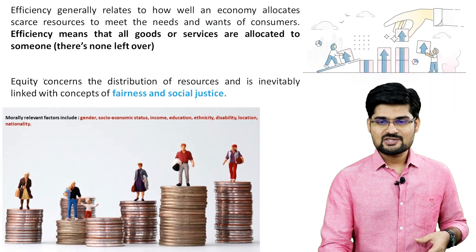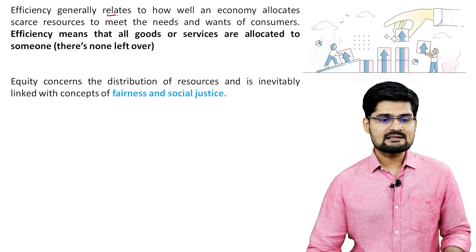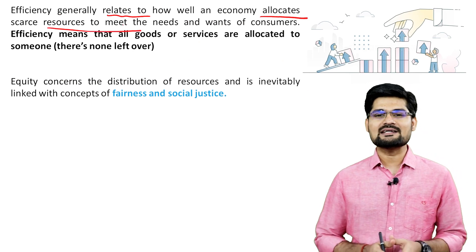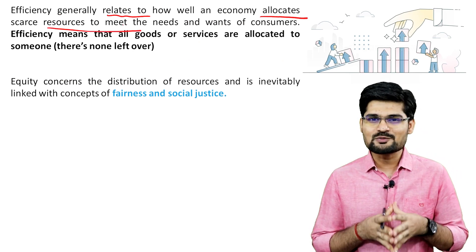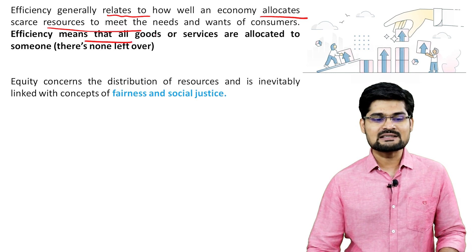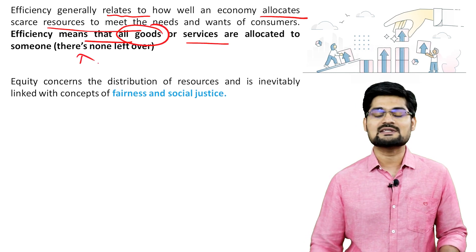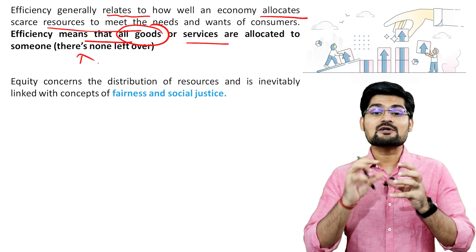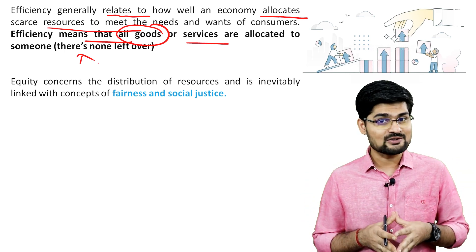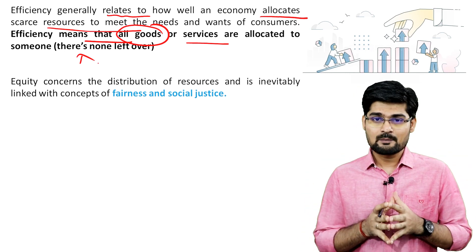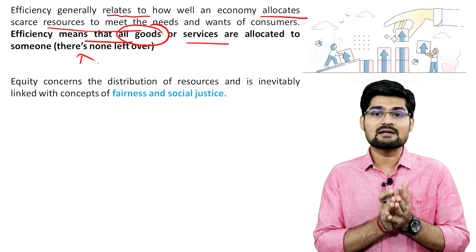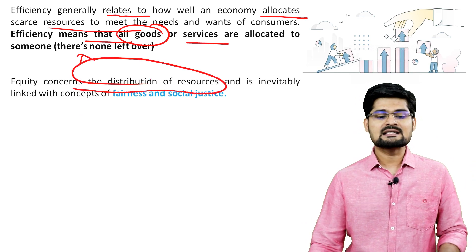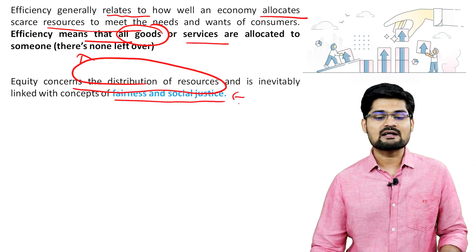In simplification, efficiency generally relates to how well an economy allocates scarce resources to meet the needs and wants of consumers. Efficiency means that all goods or services are allocated to someone — no one is left out — but it does not talk about in what manner or who gets how much. The fairness is not addressed. Everybody getting something is efficiency, but how much everybody should get and in what ways it should be given is related to equity.